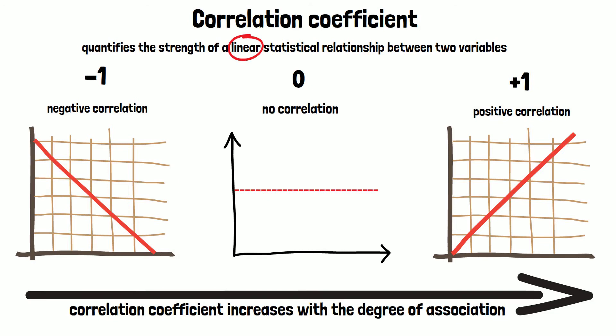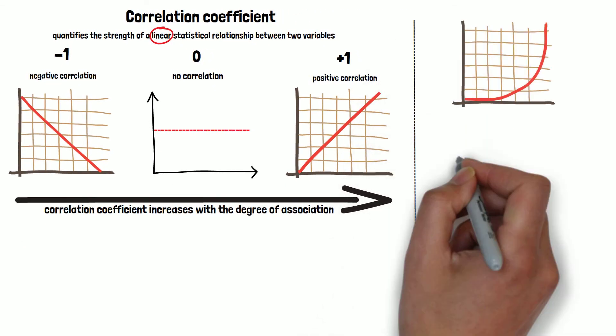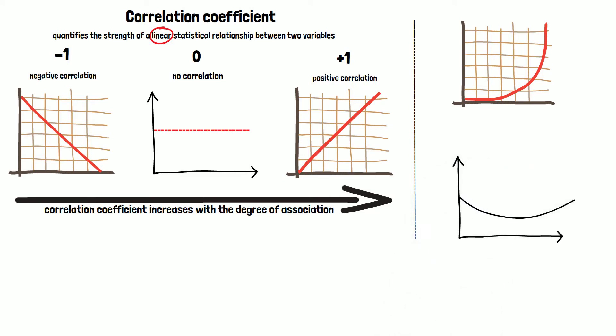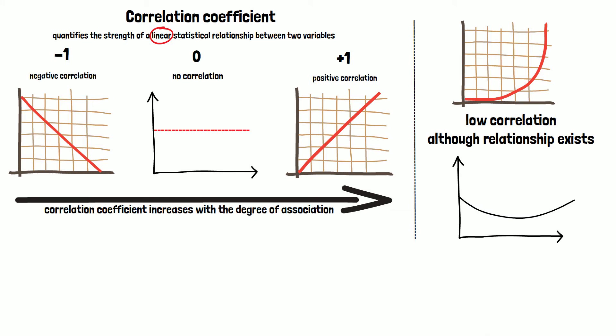If the relationship between the two variables would be rather exponential or U-shaped, for example, the correlation coefficient might show a low correlation, although a relationship between the two variables exists in reality.